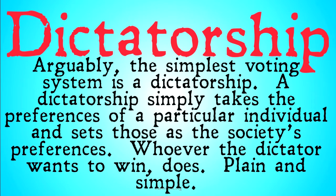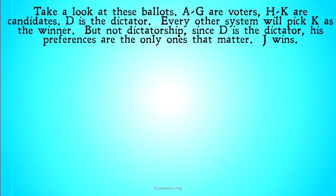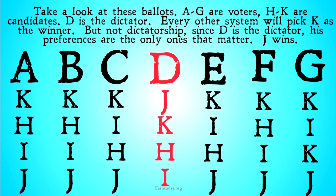Whoever the dictator wants to win does — plain and simple. So take a look at these ballots. A through G are voters, and H through K are candidates.